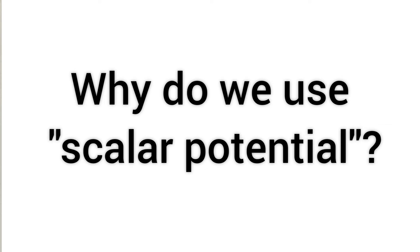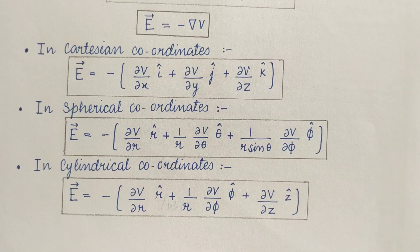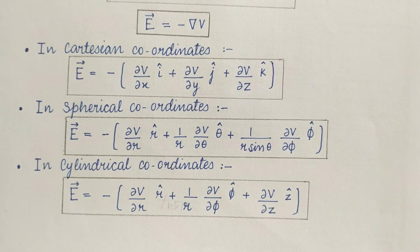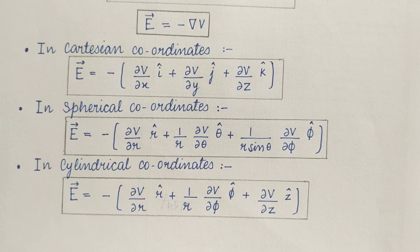From here we get the answer of one question: why do we use scalar potential? This is because it is easy to solve the scalars rather than the vectors. The electric field can be derived from the scalar function V by the gradient operation.